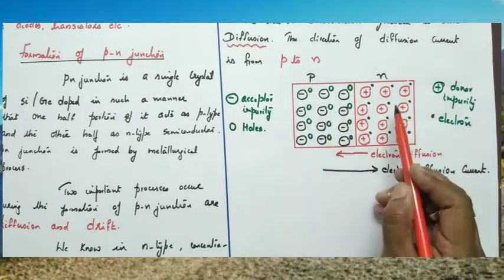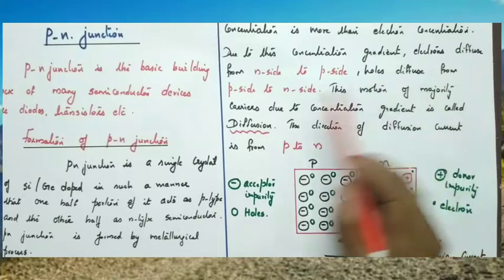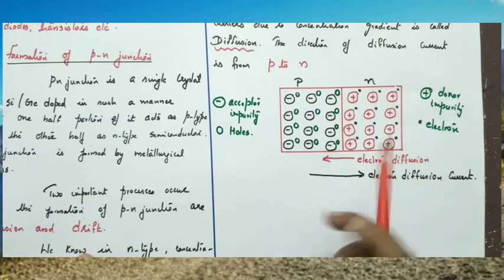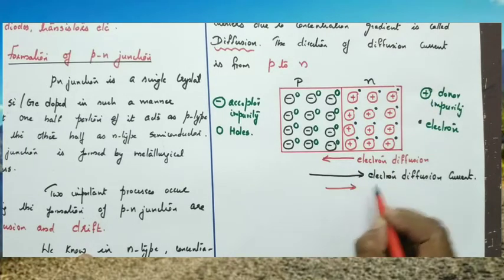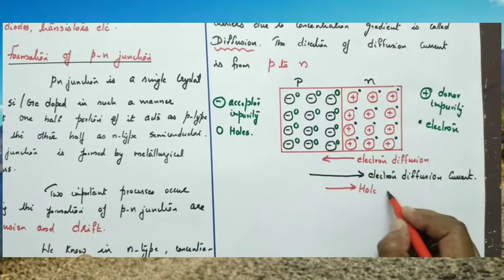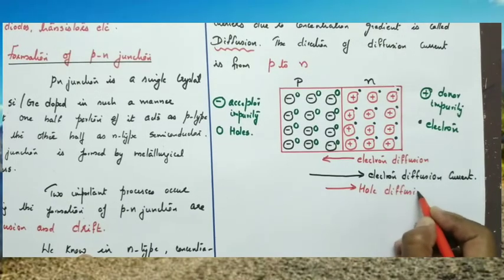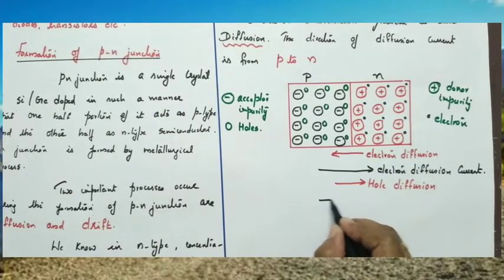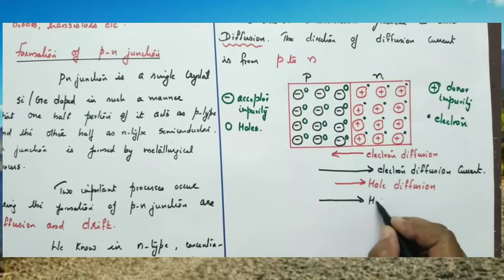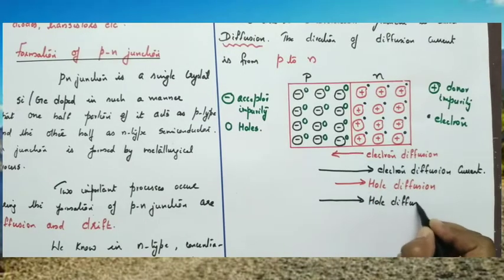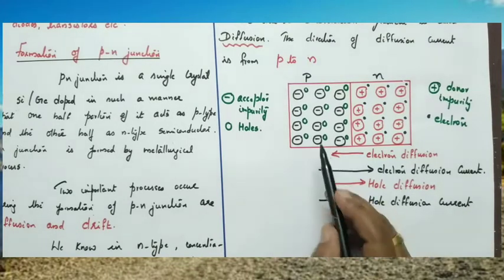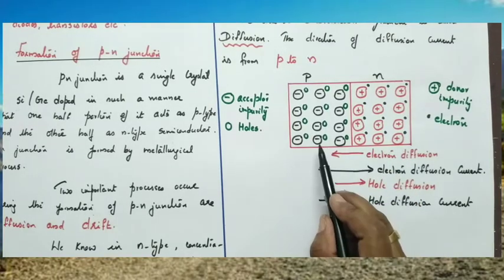Holes move from higher concentration to lower concentration — from the P side to the N side. So, holes move from P to N, and that is called hole diffusion. The hole diffusion current is in the same direction as the motion of holes, because current direction is the same as that of positive charge. So, hole diffusion current is also from P to N.